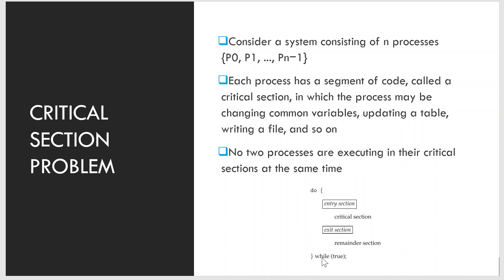This is the general structure of a typical process. The section of code implementing the request is the entry section. The critical section may be followed by an exit section. The remaining code is the remainder section. The entry and exit sections are enclosed in boxes to highlight these important segments of code.